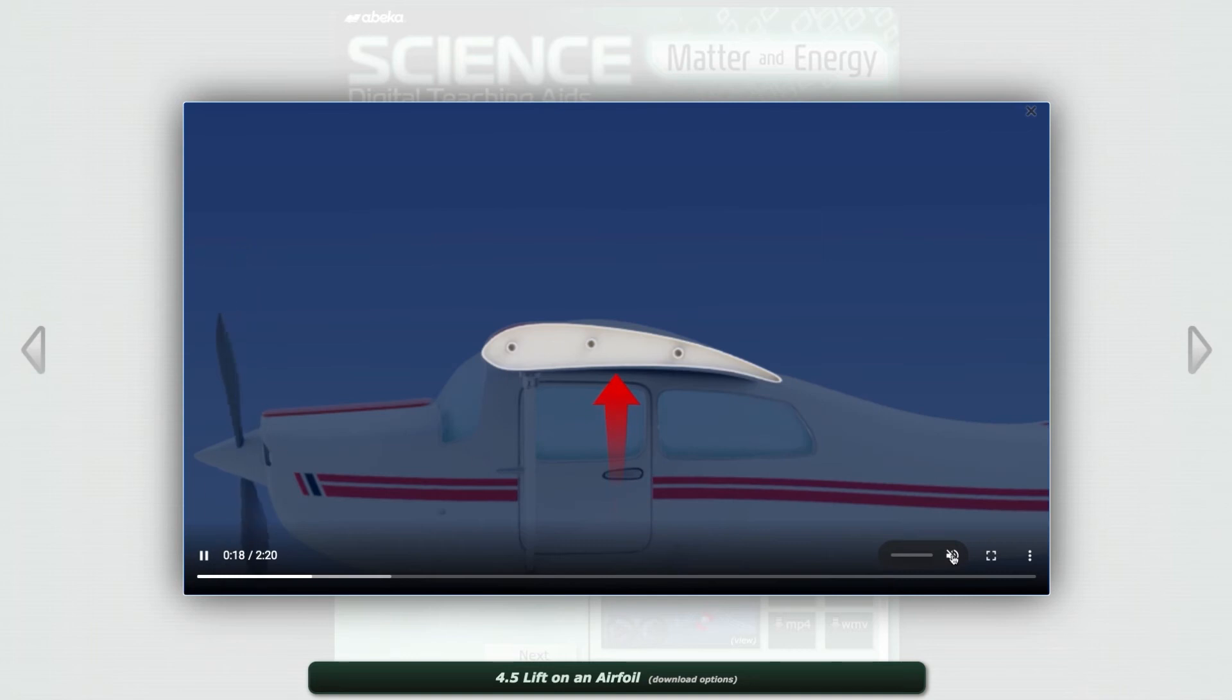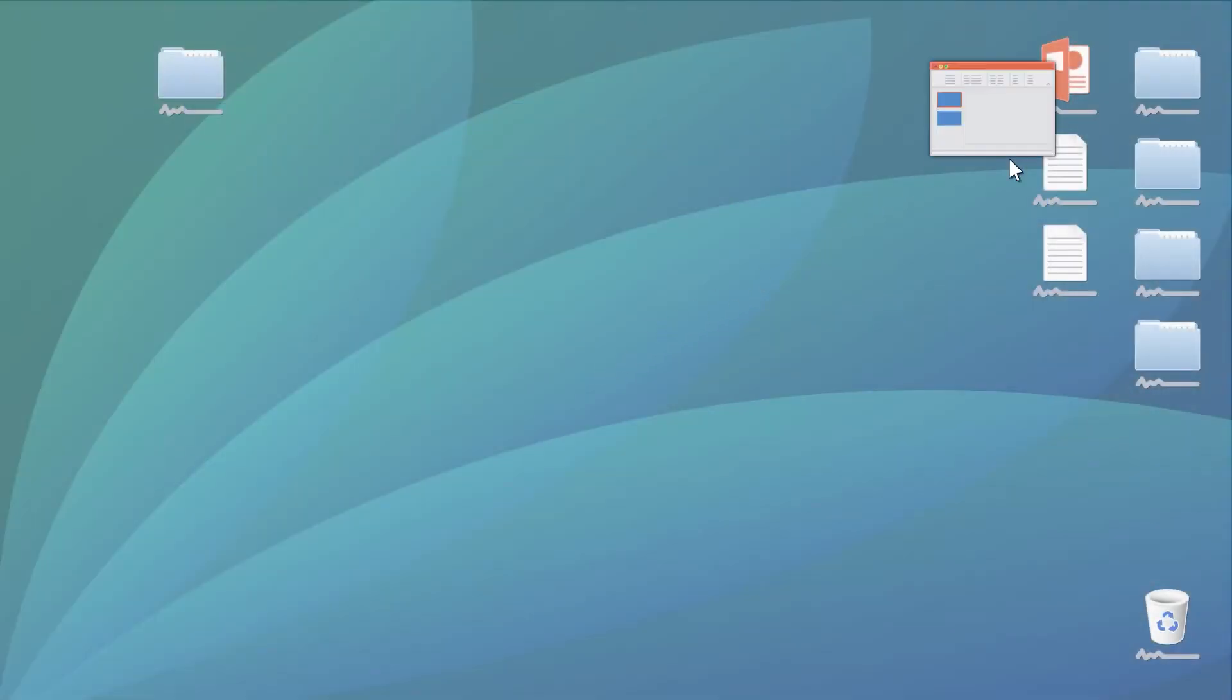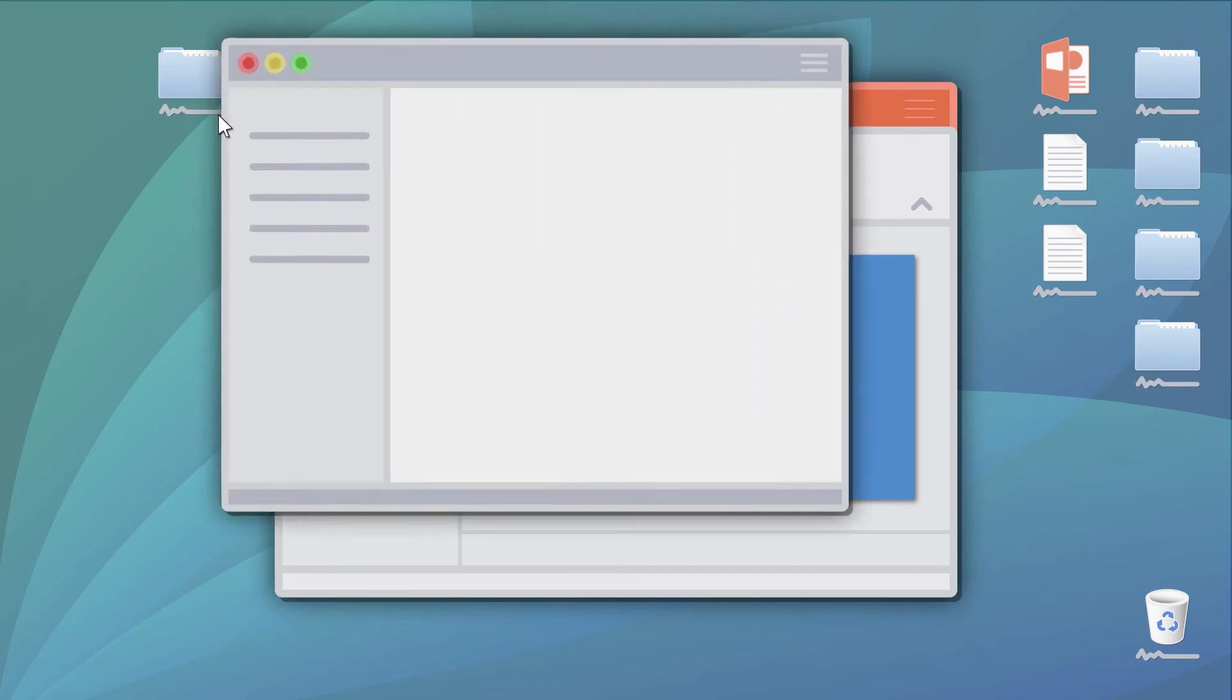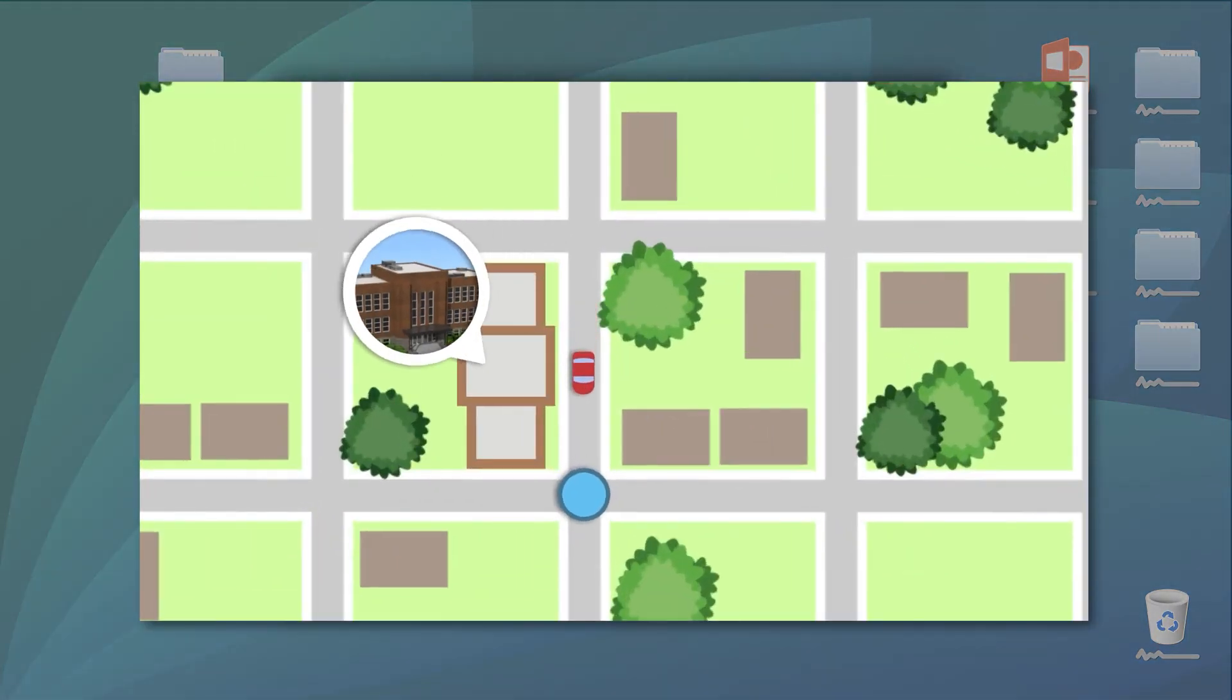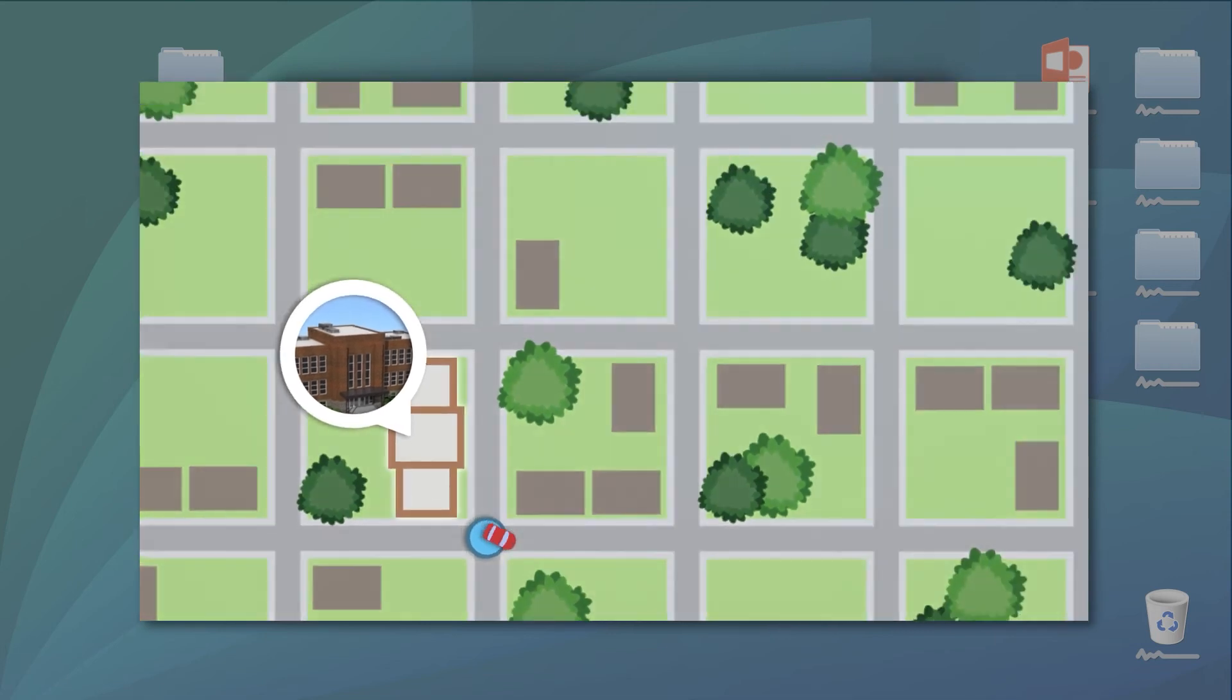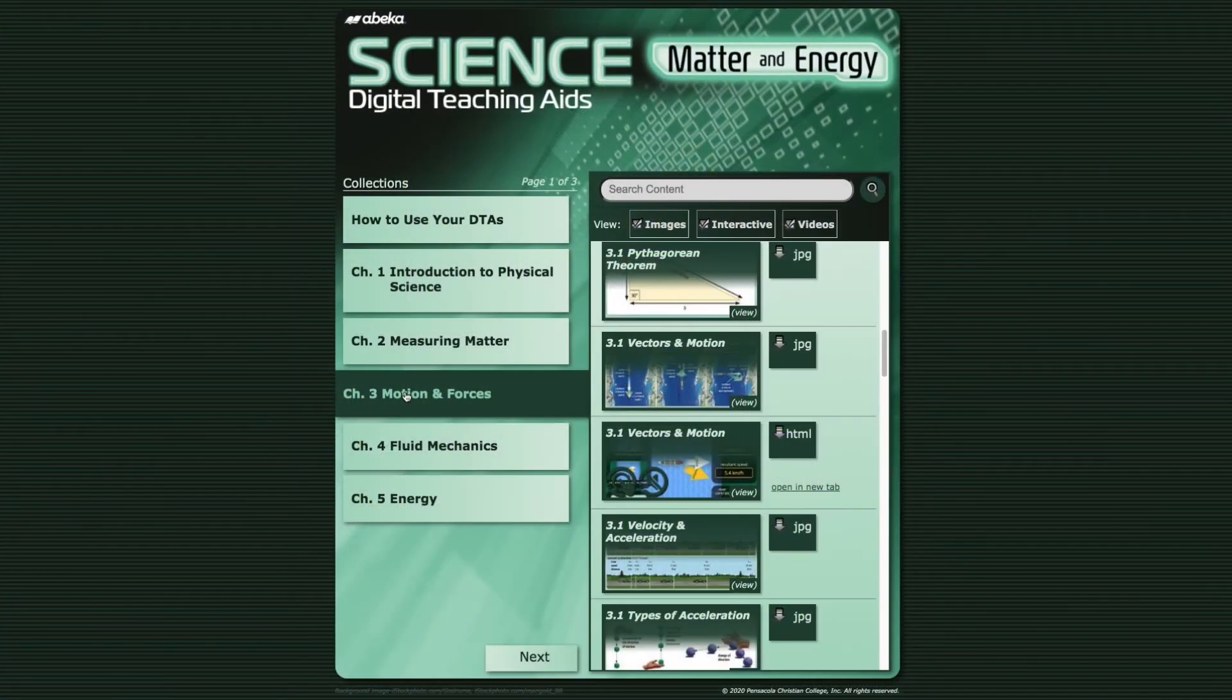These videos can be muted to allow you to teach through the video at a pace that may be more beneficial to your students. When downloaded, these videos can also be placed into a PowerPoint slide. The slide can be set to continually loop through the video so you can help students that may have questions, while others can watch the video to help them better understand the topic.